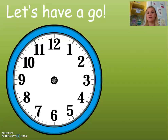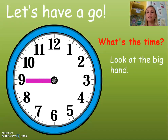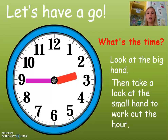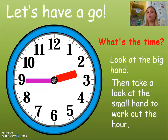So, let's take a look. We look at the big hand — it's on the 9, so we know it's quarter to. Now we need to look at the little hour hand. It's going towards the 3, so the time is quarter to 3.